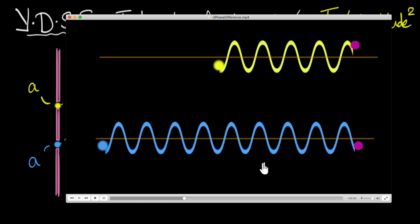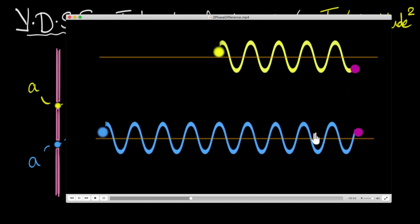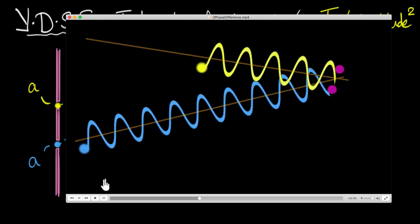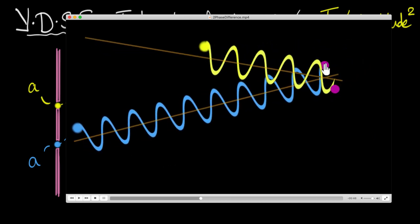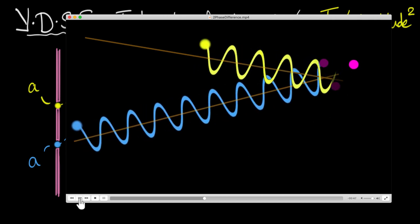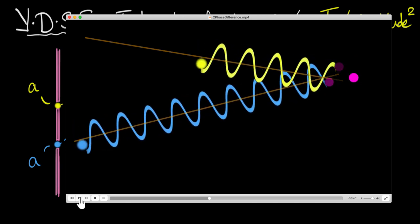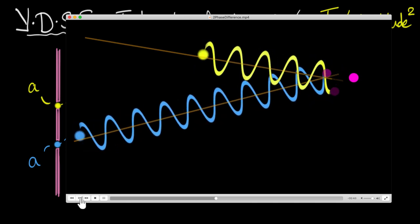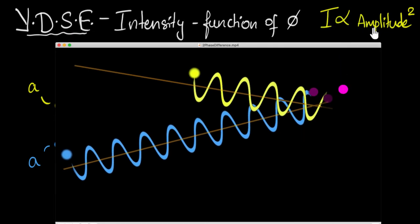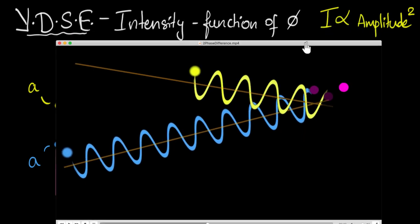Because there is a phase difference, the two particles are not oscillating in sync with each other. So in general, when the two waves meet on the screen, their individual contributions may not be in sync. And because their contributions are not in sync, the resulting oscillation will not have an amplitude of twice A — it can have any amplitude between zero and two A. Our goal now is to figure out what that resulting amplitude is in general, because the square of that is going to be the intensity.